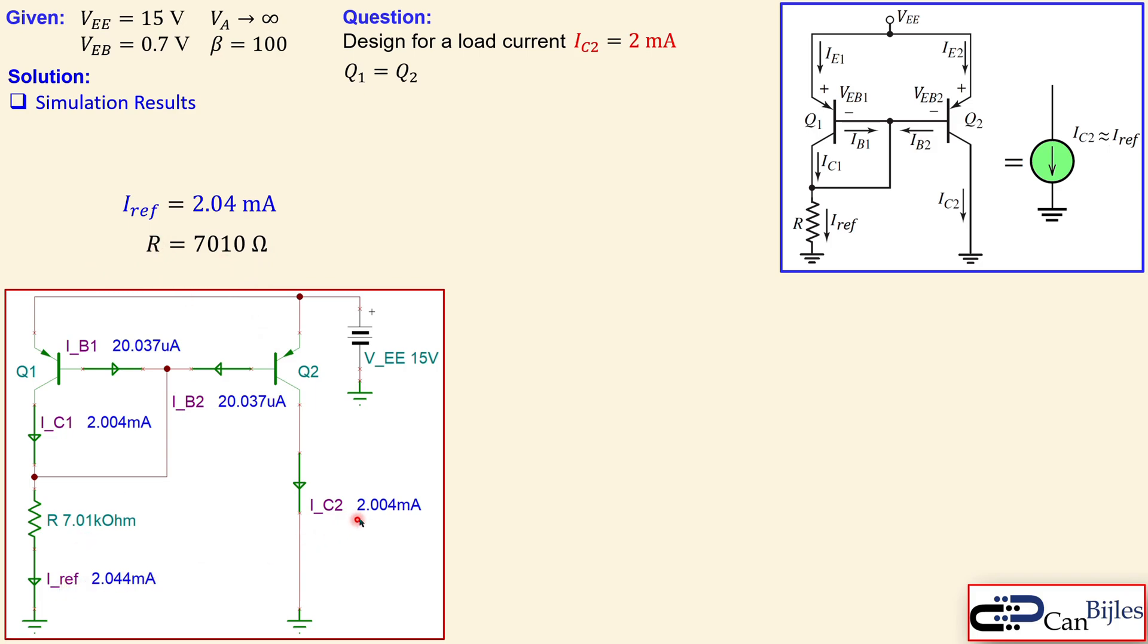But let's see what we can do to fine tune the value here for the resistor. In order to get this exactly to 2 milliamps or very close to 2 milliamps.